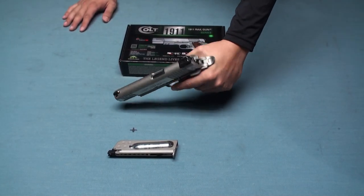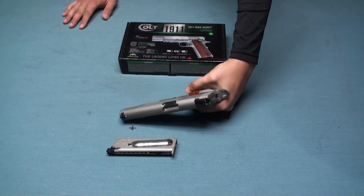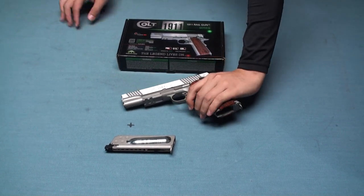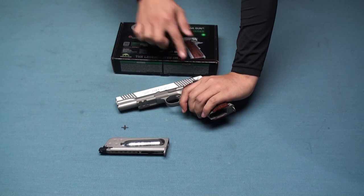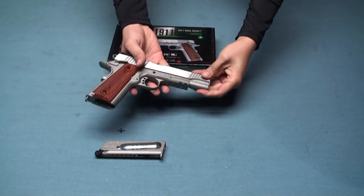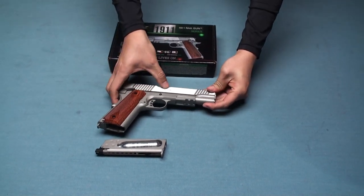This one kicks really hard. The frame and slide are made of aluminum. You can see the trademark logos on both sides of the slide, and you can see the Colt rail gun markings.